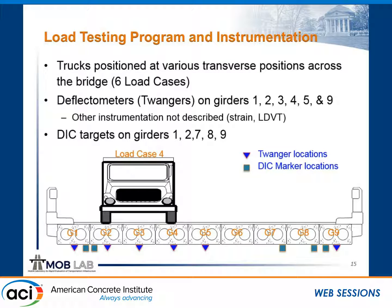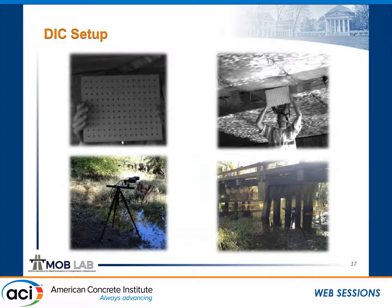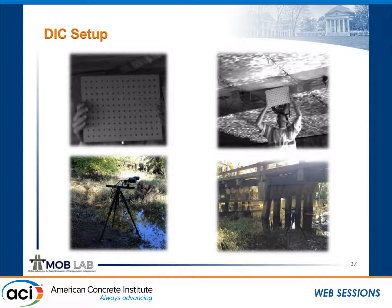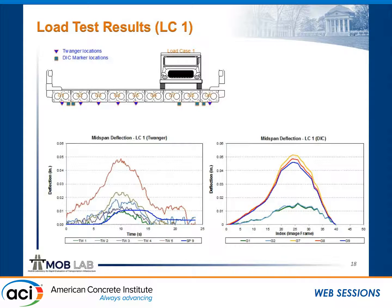The different loading configurations were intended to load different girders—an exterior, an interior, and a middle configuration. When dealing with 3D DIC, you need to calibrate your images to establish a frame of reference and apply scale. We had calibration cards up in the structure, calibrated the cameras, and were simply tracking the movement of these cards for deflection measurements. We set up our cameras in the swampy area looking at different locations. One challenge with this DIC setup was that the test took so long that light came in, flashing off the water and washing out some of our images.